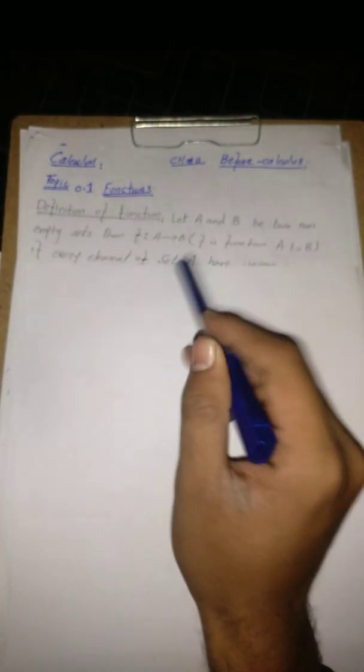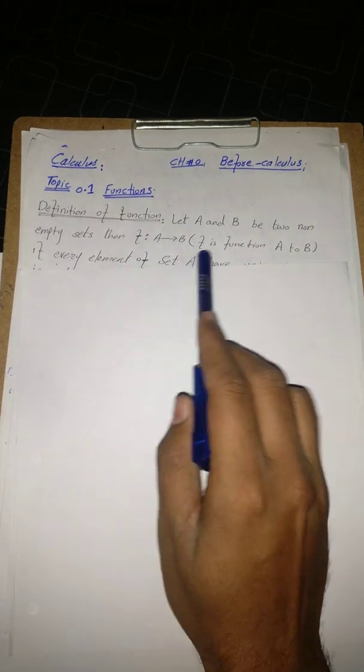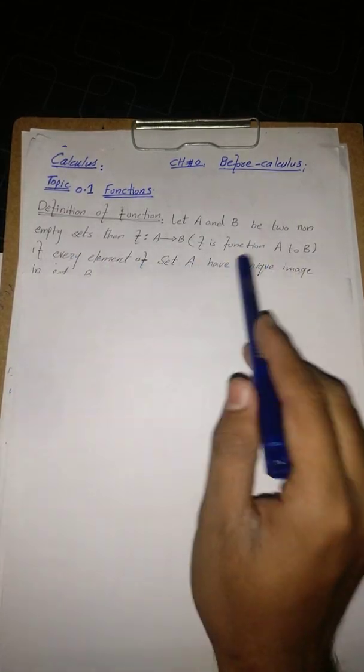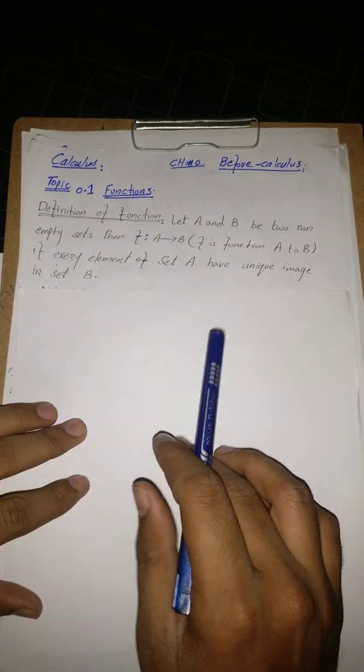There are many methods to define a function, but we take a very simple definition. Let A and B be two non-empty sets. Then f is a function from A to B — this notation is read as 'f is a function A to B' — if every element of set A has a unique image in set B. That is the definition of a function.